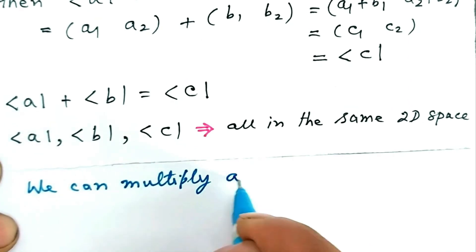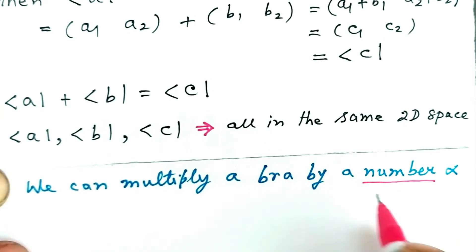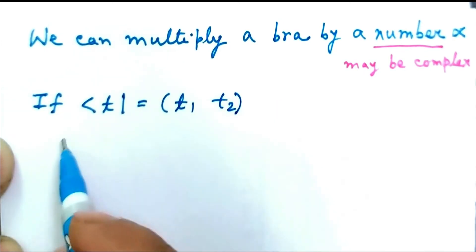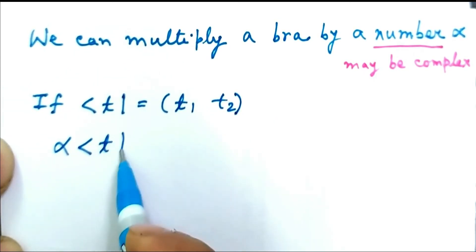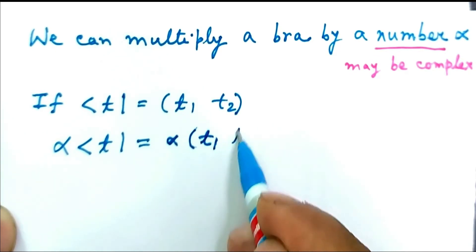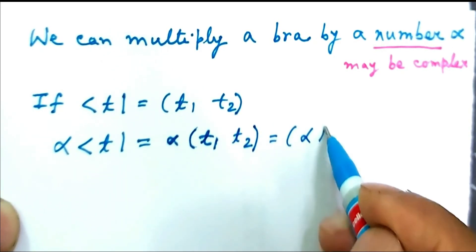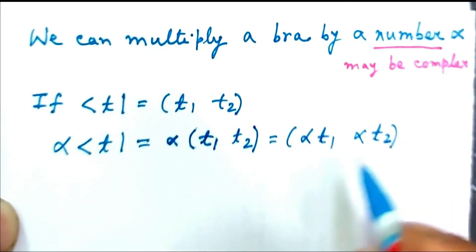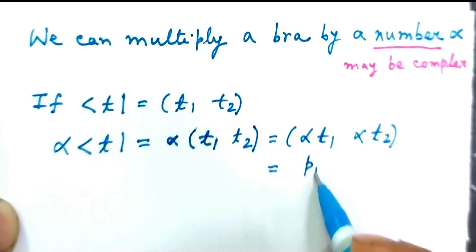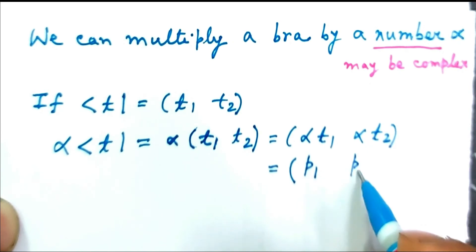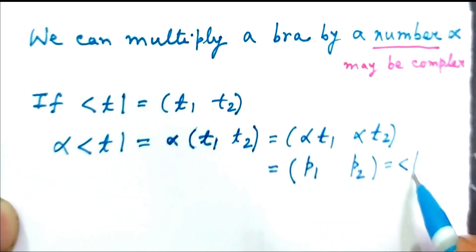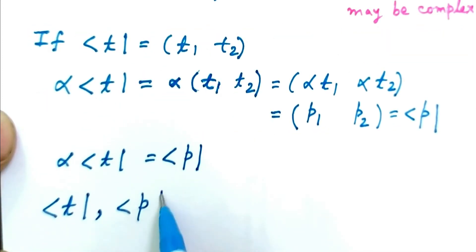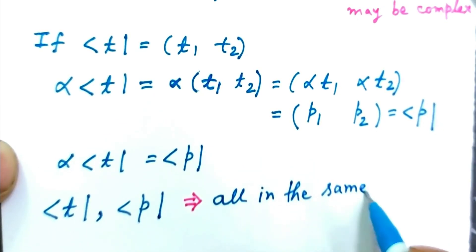We can multiply a Bra by a number, which may be complex in general, say alpha. If Bra T is the row matrix (T1, T2), then alpha times Bra T is alpha times the row matrix (T1, T2). Pushing alpha within the row matrix, we get a new row matrix (alpha·T1, alpha·T2). Defining alpha·T1 as P1 and alpha·T2 as P2, we end up with the row matrix (P1, P2), which we define as Bra P. So, alpha times Bra T equals Bra P. We note that Bra T and Bra P are both members of the same 2D space.